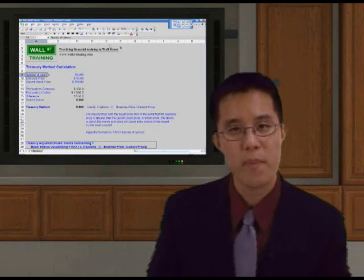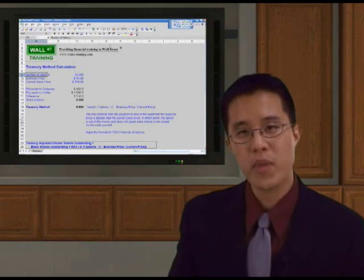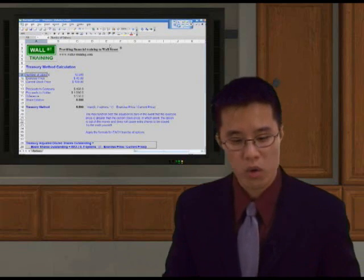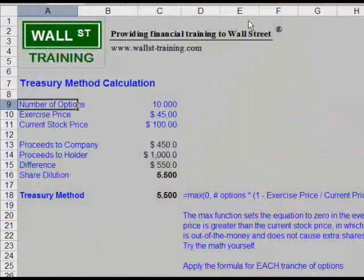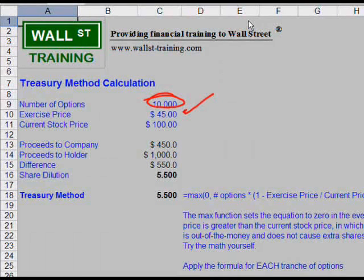For instance, let's say the management team is provided with a certain number of options from the company. Let's assume now in this sample calculation that they are given 10 options. The exercise price for this option is $45, which means that the management team has the right, but not the obligation, to buy 10 shares at $45 a share. The current market price of this stock is $100.